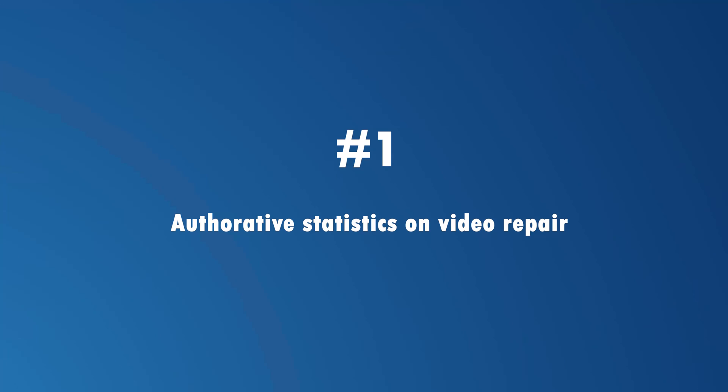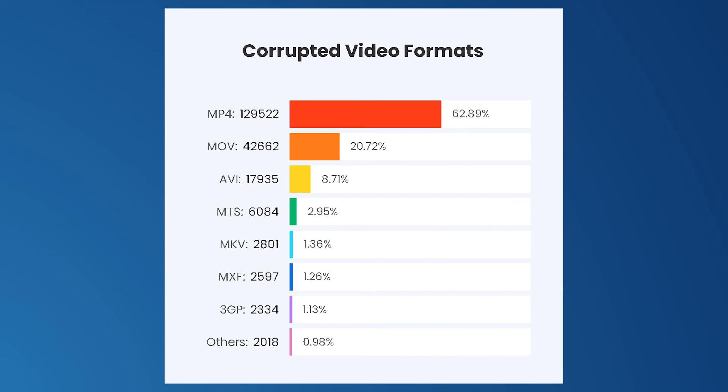Now we would like to kickstart this video with a few statistics. If we're talking about video corruption, it's important to understand that a few files are more likely to get corrupted than others. For instance, statistics reveal that MP4 files are the most common video format to get corrupted. Among all the corrupt video files, nearly 62.89% are MP4 clips. This means that if you commonly work on MP4 files, you are at a high risk of encountering video corruption errors.